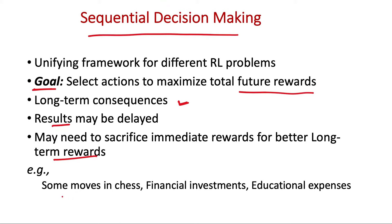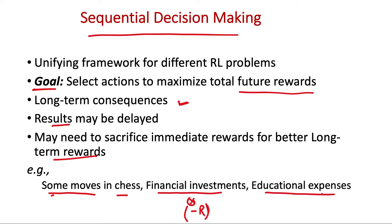Some moves in chess may not seem beneficial immediately but may be useful in the long run for winning the game. Similarly, in financial investment we give up some money in the current time — receiving a kind of negative reward — hoping to get a bigger positive reward in the future. Likewise, we spend on education hoping the return will be much more than the current expenditure.